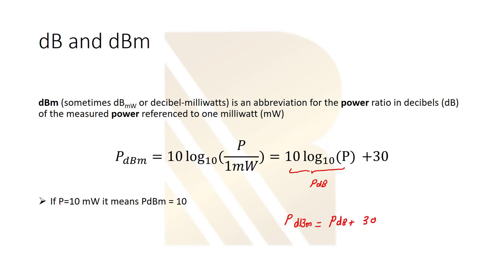For example, if our power is equal to 10 milliwatt, it means that we can write like this: 10 log, so 10 milliwatt over 1 milliwatt, and it's equal to 10.